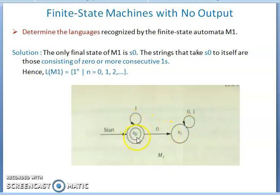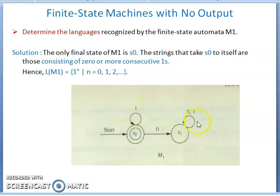You reach the final state s0 only when you remain there throughout. So the recognized language of m1 is 1^n where n ≥ 0: zero or more consecutive ones, with no zeros mixed in. Only consecutive ones (including the empty string) are recognized by this machine.